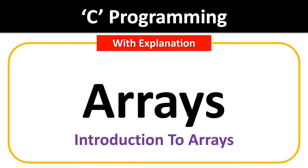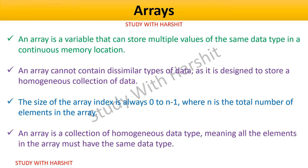What is an array? In C programming, an array is a variable that can store multiple values of the same data type in a continuous memory location. It is a data structure that allows you to store multiple values of the same data type in a continuous block of memory, meaning the elements are stored one after the other, making it easy to access and manipulate them.